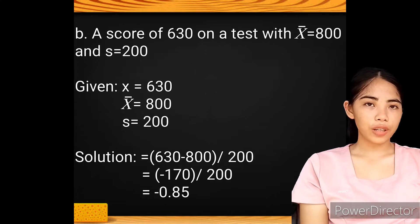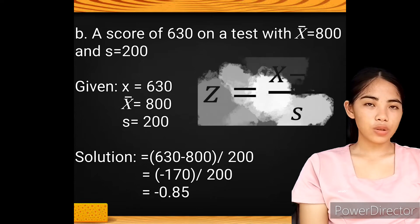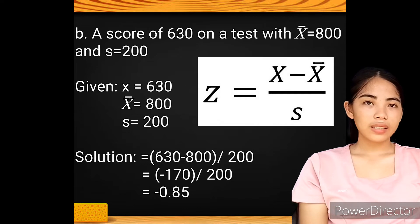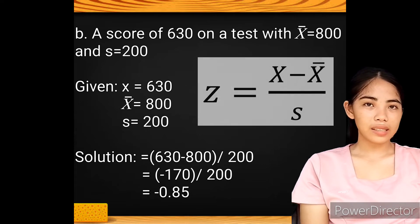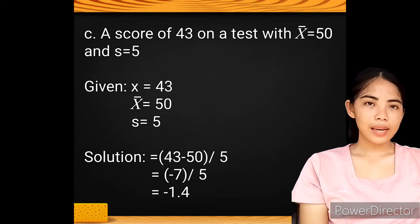For test B, the values are 630, 800, and 200. Substitute all the values into the formula. So we have 630 minus 800 divided by 200. 630 minus 800 equals negative 170. Negative 170 divided by 200 equals negative 0.85.